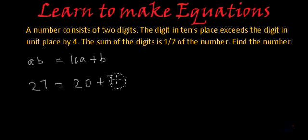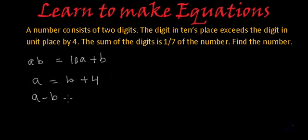Yes, so now let's read it further what they say. They say the digit at tens place exceeds the digit in units place by 4. So if B is the digit at units place, A is actually B plus 4. Or if you write all the variables on the left hand side, we will get A minus B is equal to 4 and let's call this as equation number 1.